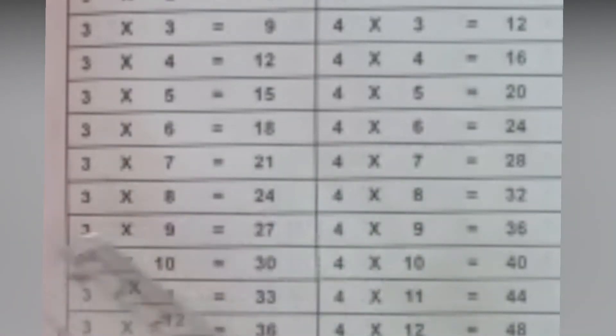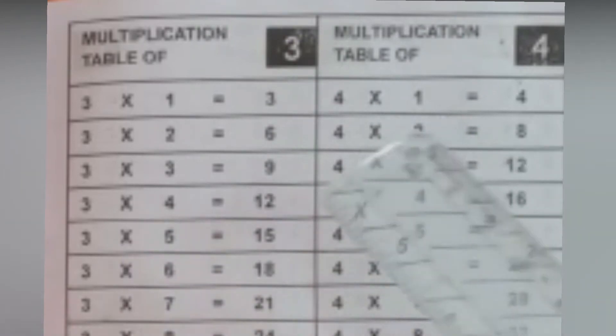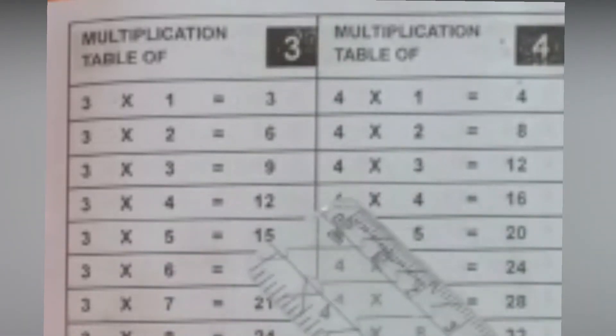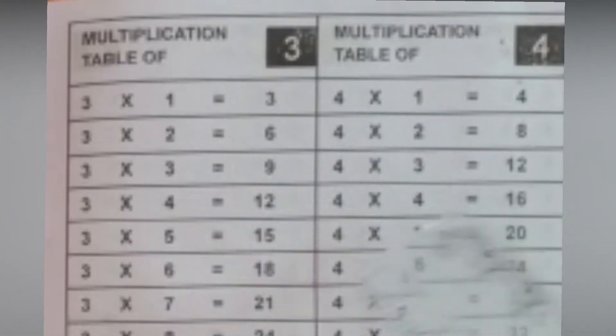Now let us learn multiplication table of 4: 4 ones are 4, 4 twos are 8, 4 threes are 12, 4 fours are 16, 4 fives are 20, 4 sixes are 24, 4 sevens are 28, 4 eights are 32, 4 nines are 36, 4 tens are 40.